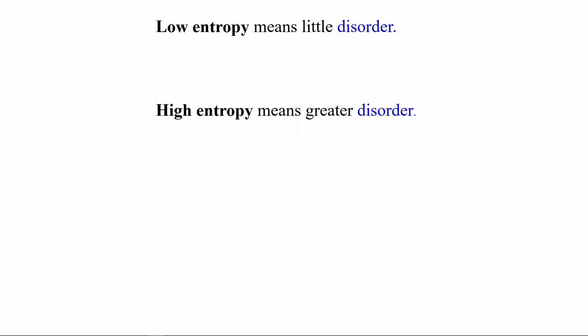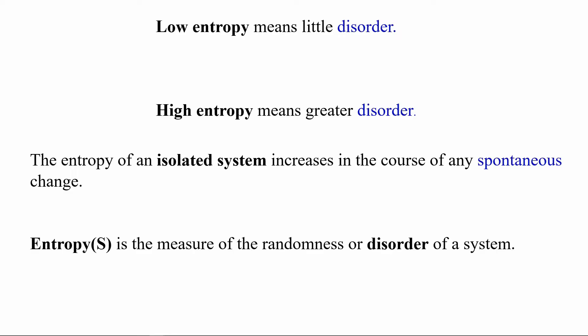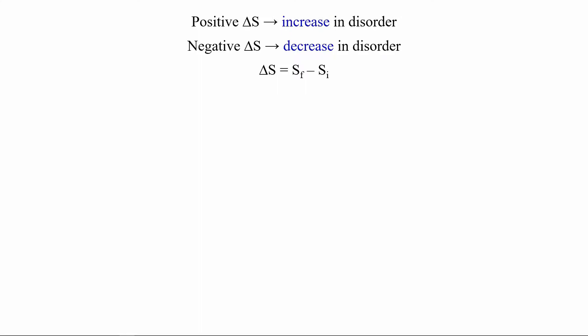Low entropy means very little disorder, and high entropy means greater disorder. The entropy of an isolated system is going to increase in the course of any spontaneous change. This entropy measurement is a measurement of the randomness or disorder in the system. As order increases, entropy decreases. If disorder increases, entropy increases as well. A positive change in entropy is an increase in disorder, and a negative change in entropy is a decrease in disorder.